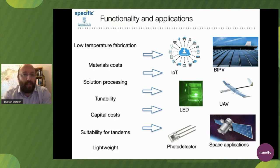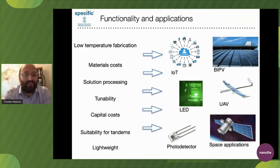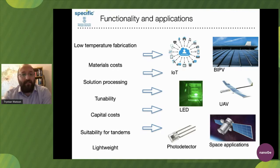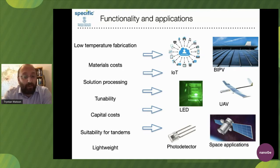Low temperature fabrication allows us to do work on plastics and metals at pretty low material costs, though there's still work to be done in some of the materials - which is always good news. We can solution process, but not only solution process - we can also vacuum deposit, so it lends itself to both. It's tunable, meaning we can adjust the band gap, which makes it suitable for tandems, for example, and we may hear a little about that later.